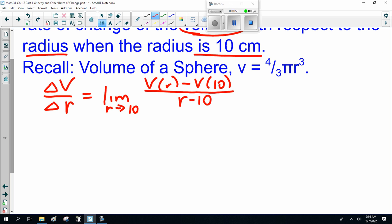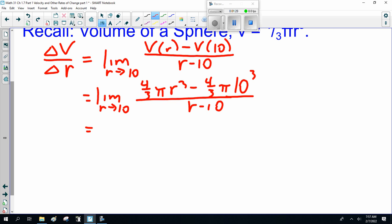Let me see. So that's the limit as r goes to 10. Now, volume is 4/3 π r³ minus 4/3 π 10³ over r minus 10. Now, a couple different ways to do this, but I want to point out right now, 4/3 π is a constant. So I can factor that out.